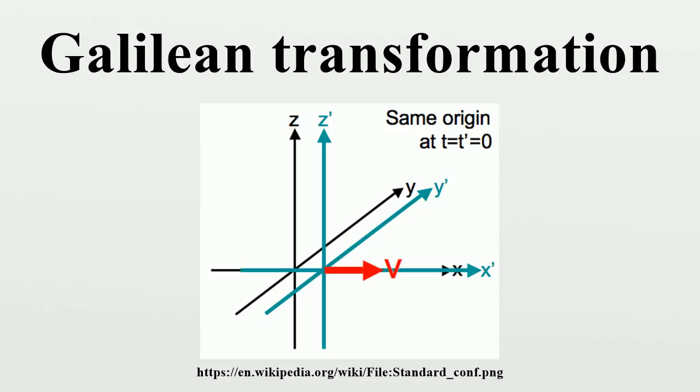In the language of linear algebra, this transformation is considered a shear mapping, and is described with a matrix acting on a vector. With motion parallel to the x-axis, the transformation acts on only two components.